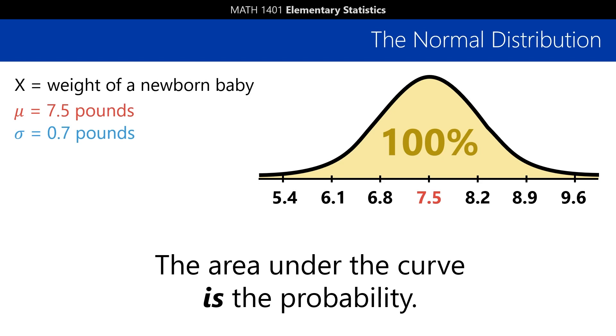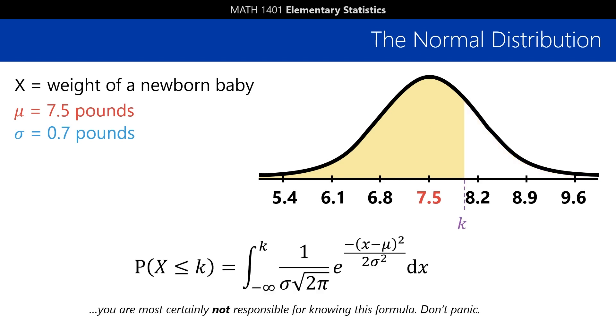The downside of the normal distribution, though, is that it's much harder to write down an expression for those probabilities. I mean, just look at this. So, instead, we usually just stick to calculating them numerically using technology.